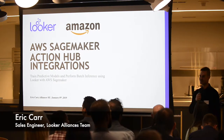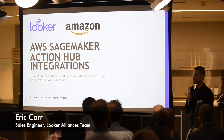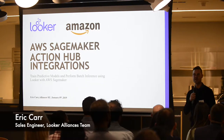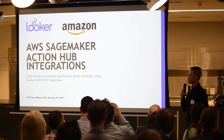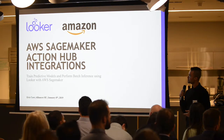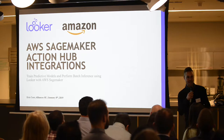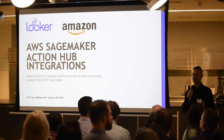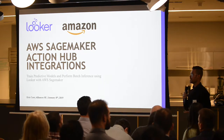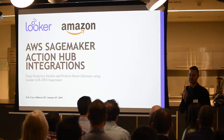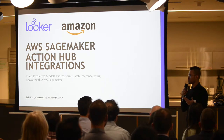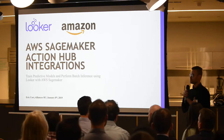Hi, my name is Eric Carr, and like Drew said, I'm a sales engineer. I work with the alliances team at Looker, and my specialty is ML and AI. Today we're going to talk about some exciting things that we're doing with AWS SageMaker — how that integrates with SageMaker and how we're working to automate the machine learning process and make it more accessible to everybody in the company, not just data scientists who live in Python, but to business users, marketing analysts, and people who don't live and breathe Python on a daily basis.